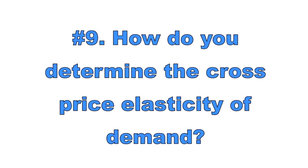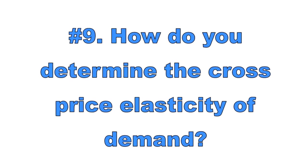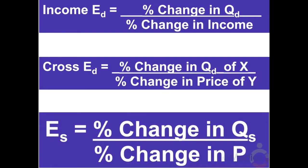Number nine: how do you determine the cross-price elasticity of demand? The cross-price elasticity of demand is useful in determining whether two goods are related to one another. The formula is percent change in quantity demanded of good X divided by percent change in the price of good Y. If the cross-price elasticity is positive, the goods are substitutes. If it is negative, the goods are complements. If the goods are unrelated, the number should be close to zero.